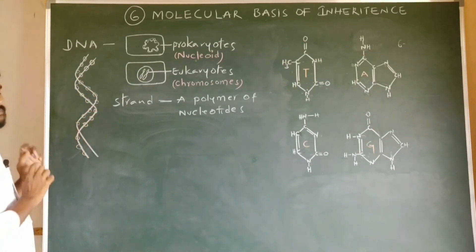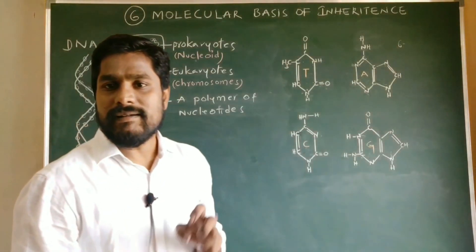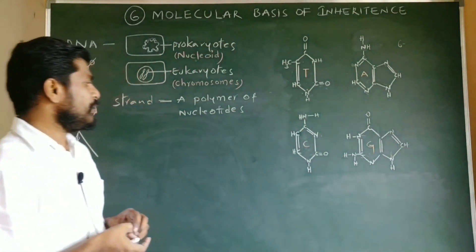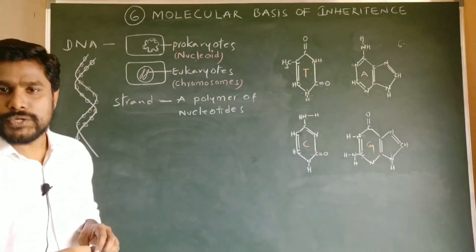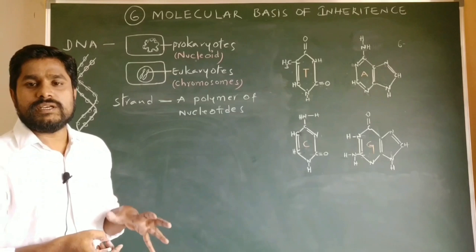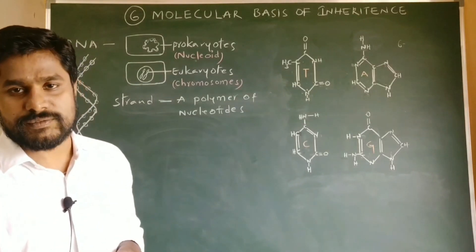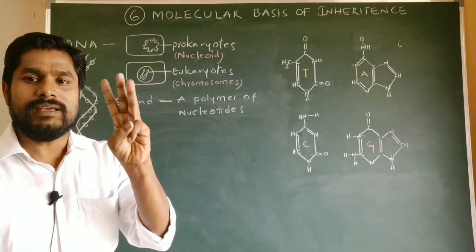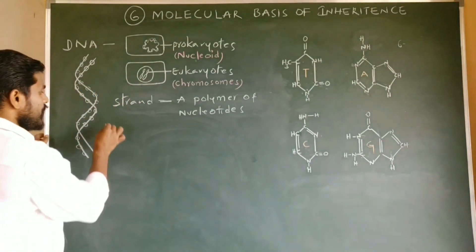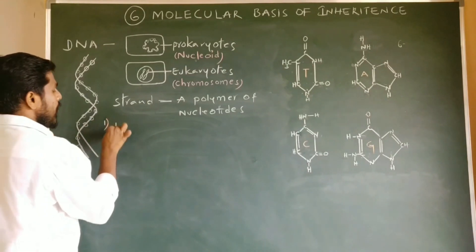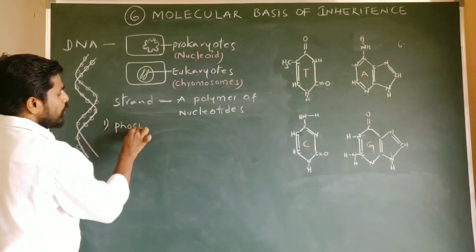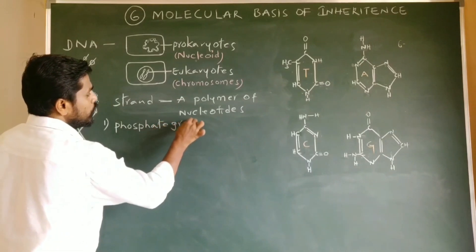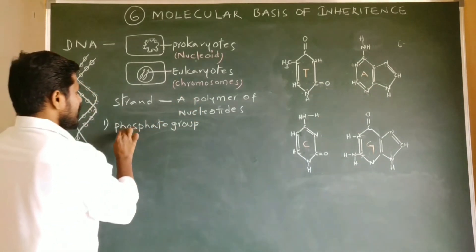In order to know the detailed chemical structure of DNA, we first need to know the chemical structure of a nucleotide — what a nucleotide is actually composed of. Generally, a nucleotide of DNA consists of three chemical components. One is the phosphate group.